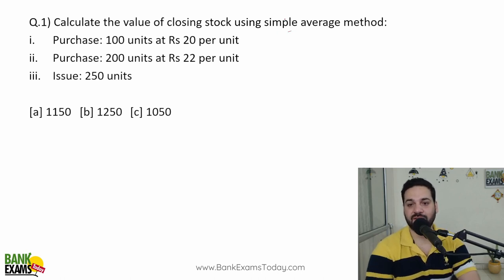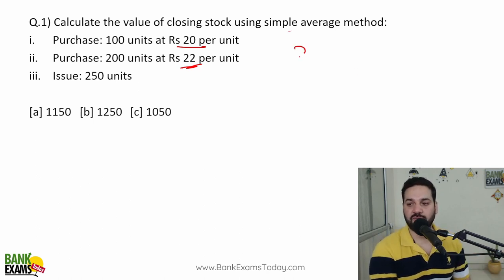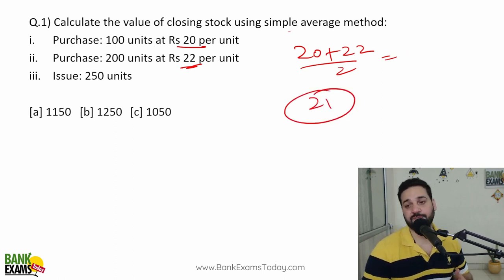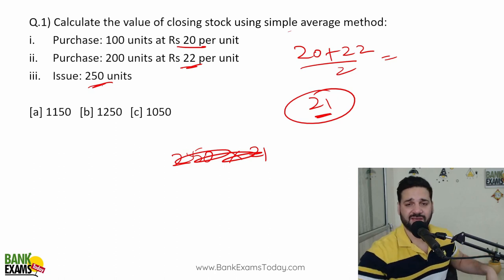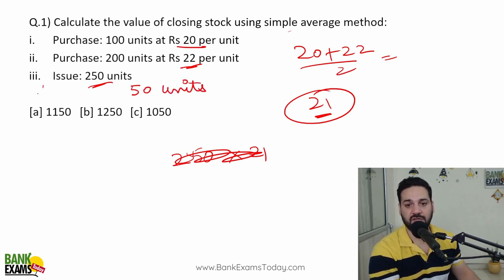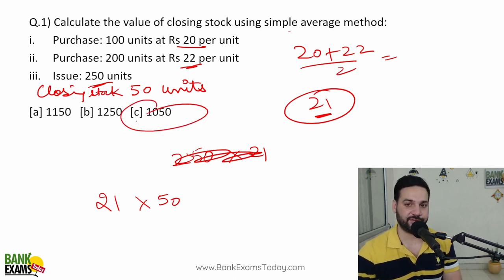Now let's get back to the actual exam question: calculate the value of closing stock using the simple average method. First order: 100 units at rupees 20 per unit. Second order: 200 units at rupees 22 per unit. Simple average: (20 + 22) / 2 = rupees 21. That is the average price. You purchased 300 units total and 250 units have been issued, so the closing stock is 50 units. Closing stock value = 21 multiplied by 50 = rupees 1,050. That is your correct answer.